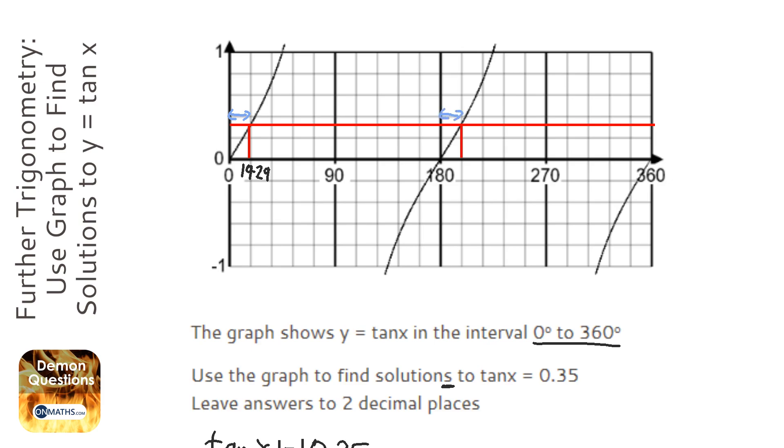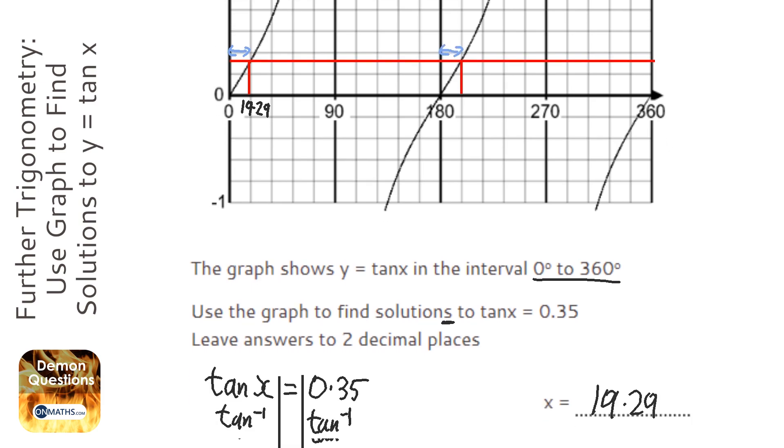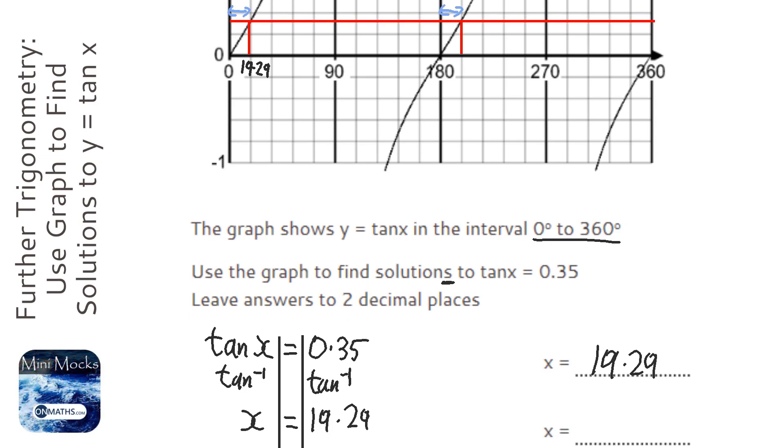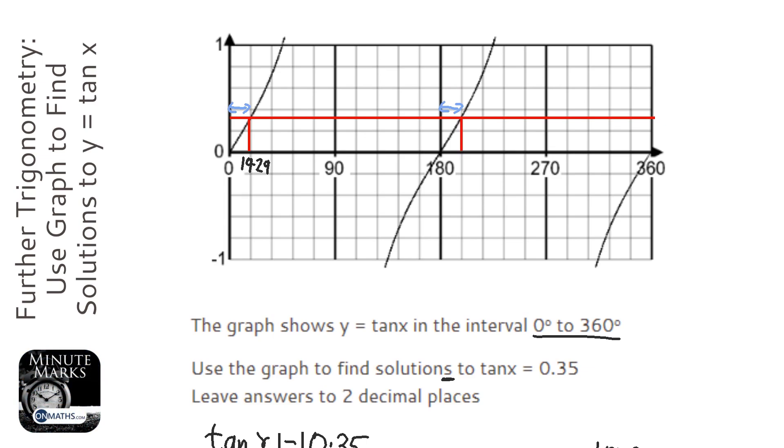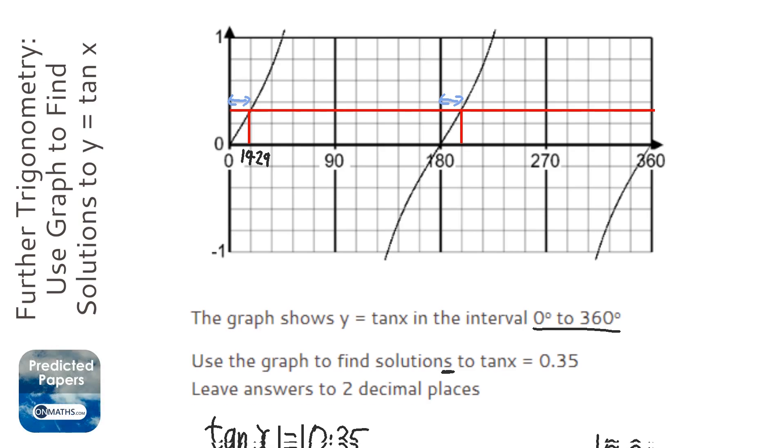So all we need to do is add 180 to our answer, which is 199.29. So with tan, all you need to do is add 180 to find alternative answers. And tan waves go on forever—in fact, sine and cos waves go on forever—so you can constantly add 180 to find new answers to it.